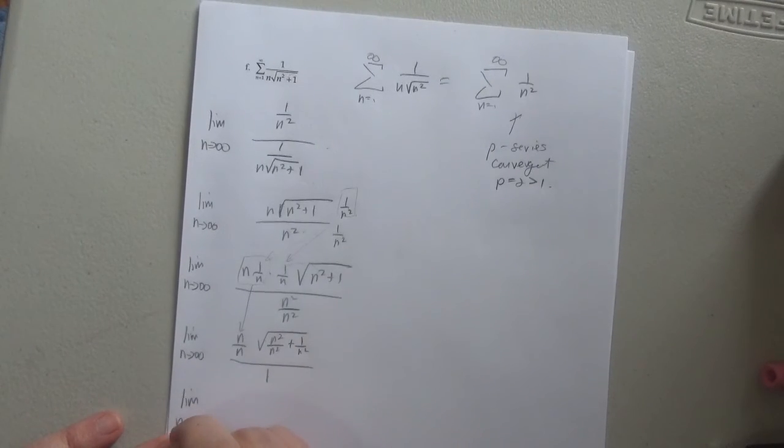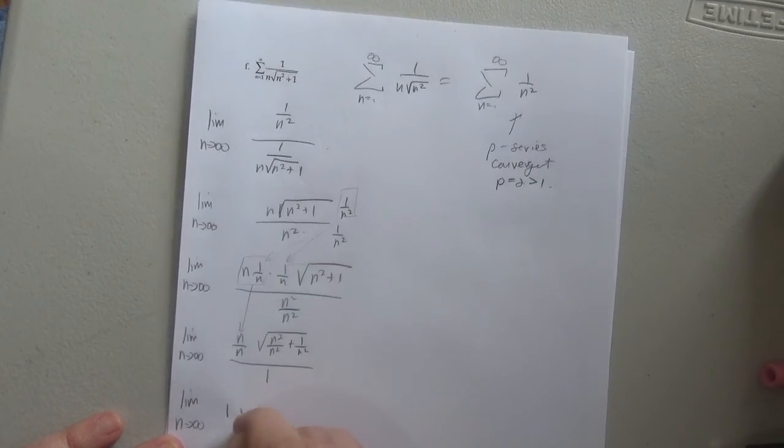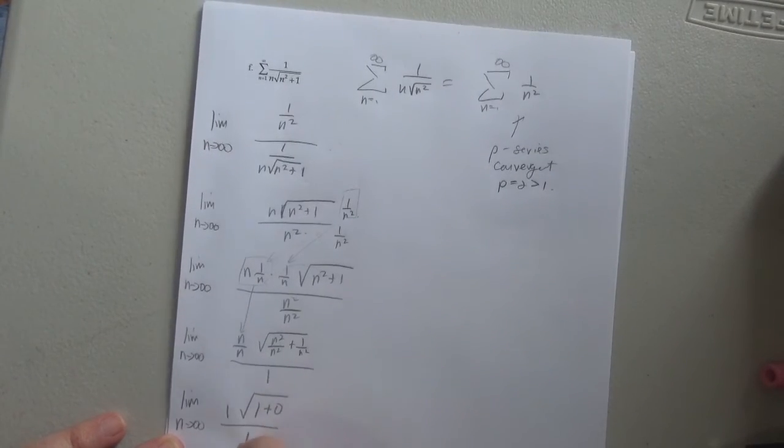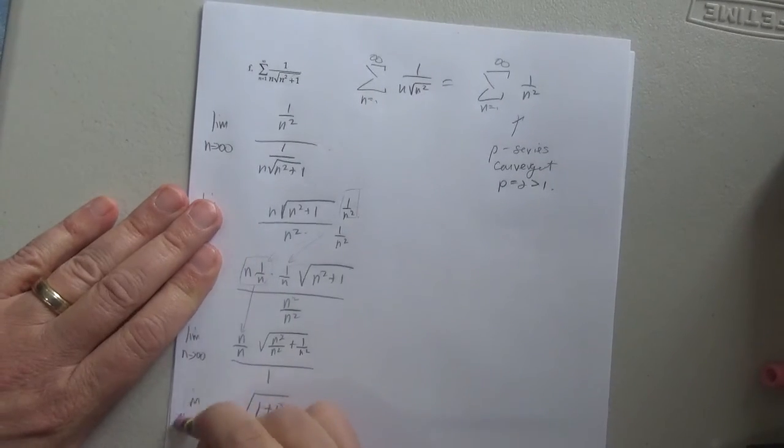So I have the limit. I'm going to write it explicitly. 1 square root of 1 plus 0. Whoops. I evaluated the limits. I didn't need to write the limit again.